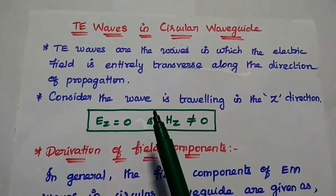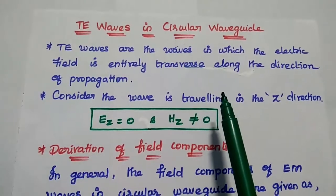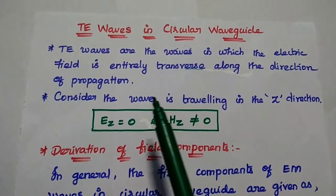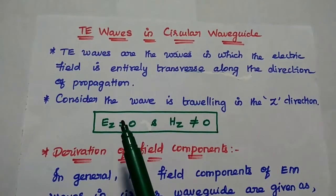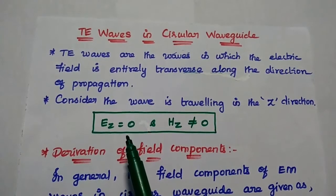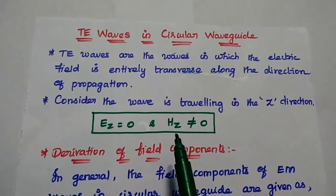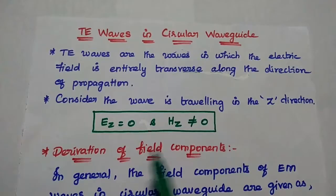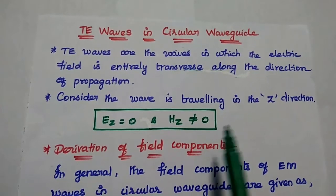Dear students, now we are going to discuss TE waves in circular waveguide and derive its field components. TE means transverse electric waves. These are the waves in which the electric field is entirely transverse along the direction of propagation. For example, consider the wave is travelling in the z direction. Then the electric field in that direction becomes zero. Here the magnetic field is present in that direction, that is Hz is not equal to zero. In case of TE waves, Ez is equal to zero and Hz is not equal to zero. This is the condition.